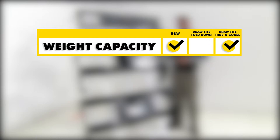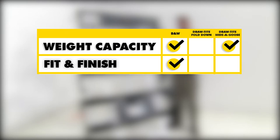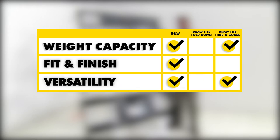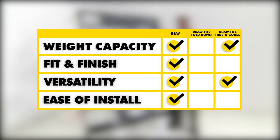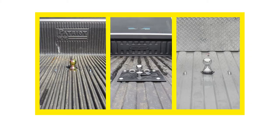To sum everything up, as far as weight capacity goes, I'm going to have to give it to our under bed kits, the B&W and the draw-tight hide-a-goose, because of the 30,000 gross trailer weight rating, and the 7,500 pound vertical load limit. Now as far as fit and finish goes, I think I'm going to give it to the B&W, because the experience with installing all three of these kits, it does fit very nicely, and it gives you that nice clean look in the bed. Now when it comes to versatility, I think the draw-tight hide-a-goose and the B&W again, are going to take you into this category, simply because of the available options and accessories you can get for them. As far as ease of installation goes, I'm going to give it to the B&W here, because after installing all three of these, I felt that it was the easiest to install, as well as accessing all our bolts and torquing everything down.